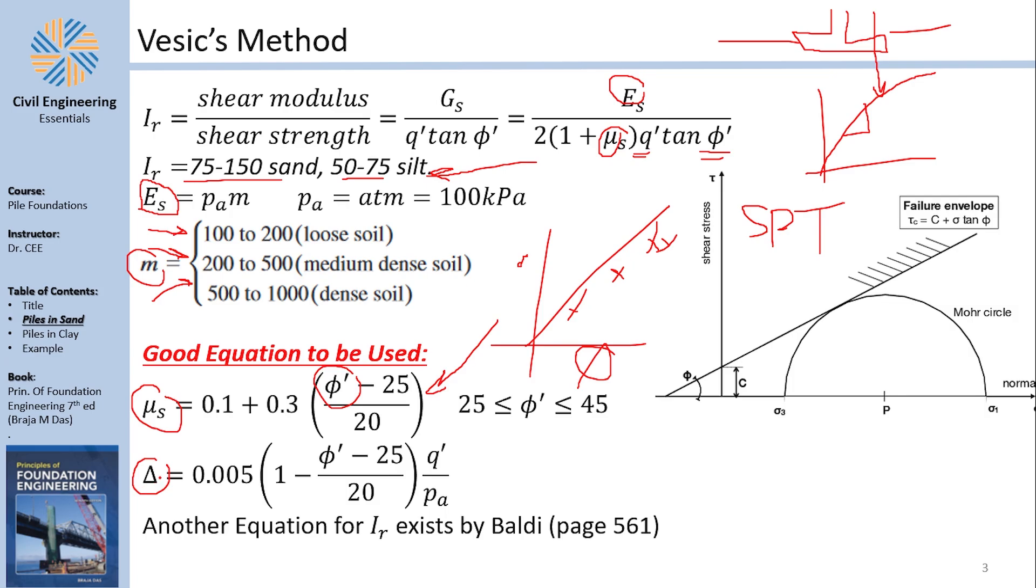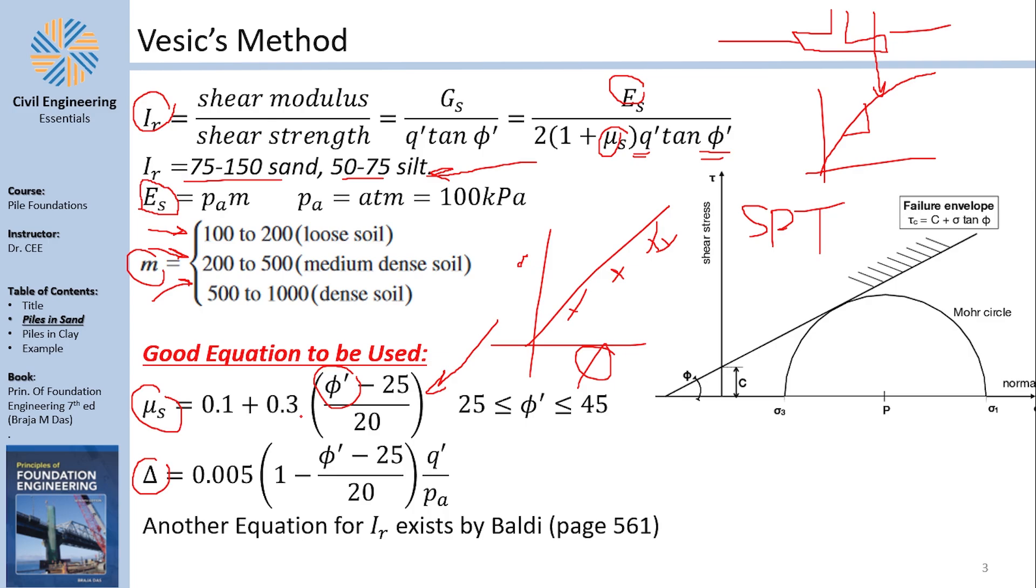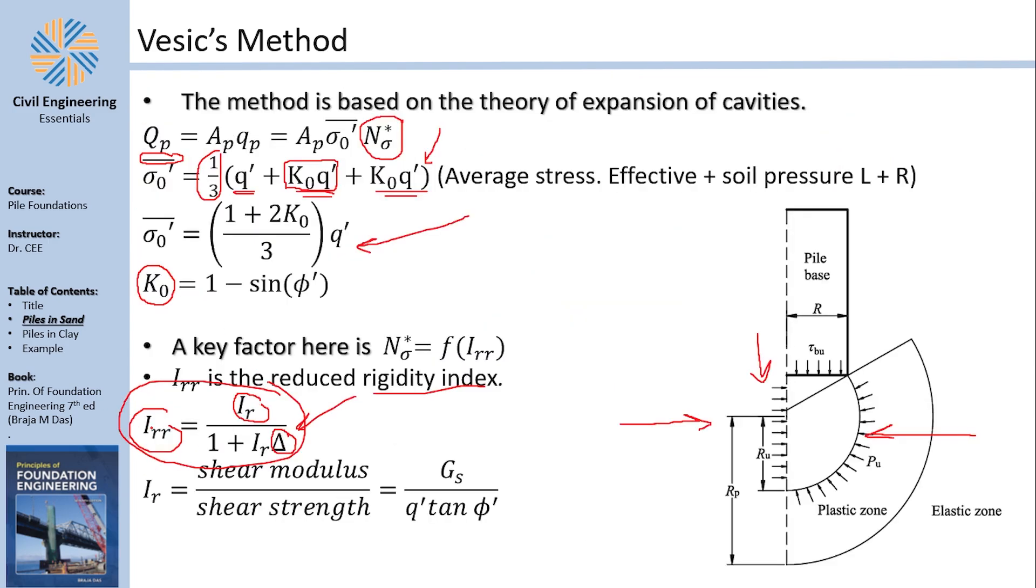And that, of course, is here the volumetric strain. Now, all of this will lead to you finding something called Ir, which is the rigidity index, and then Irr, which is the reduced rigidity index, based on Δ. If you have a clay, then this entire thing becomes zero, and you can just go with Irr equals Ir.